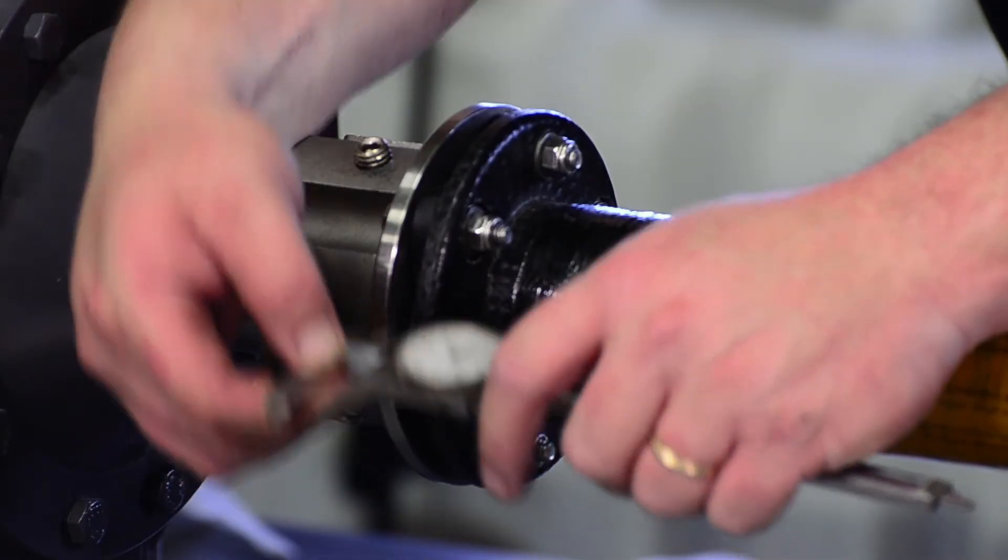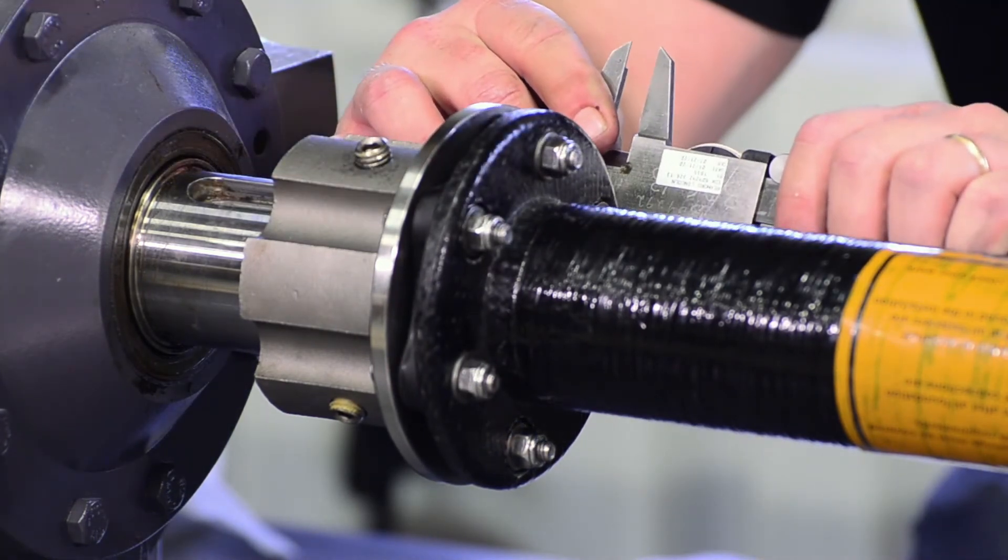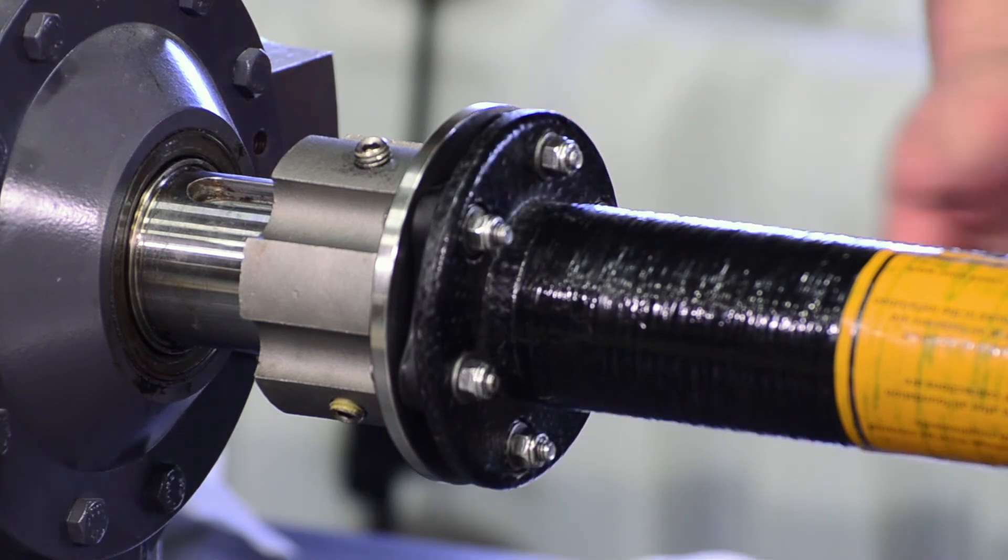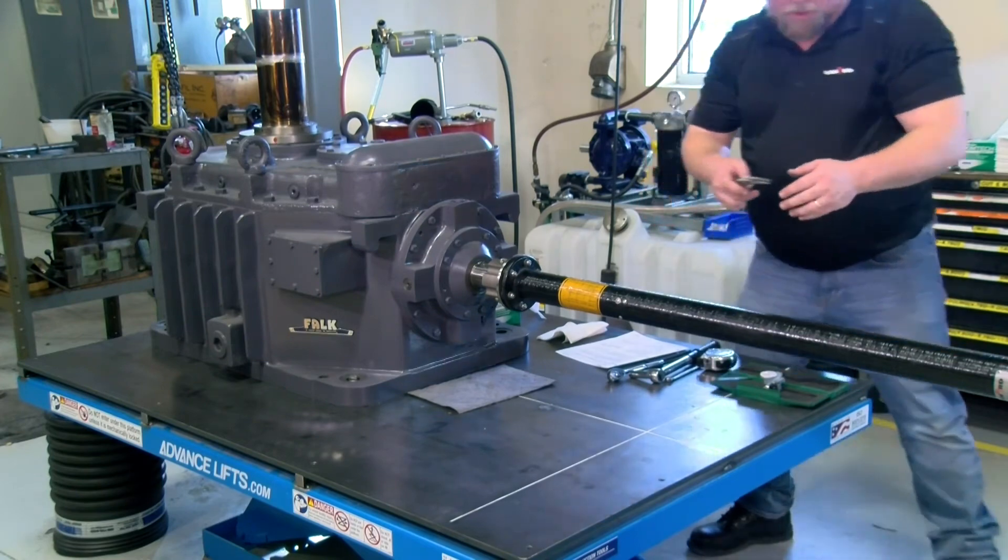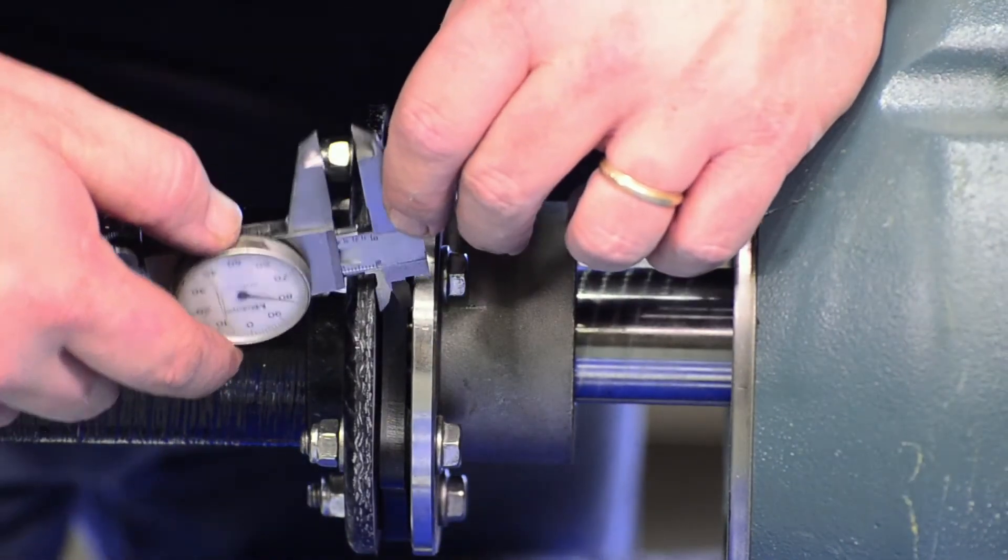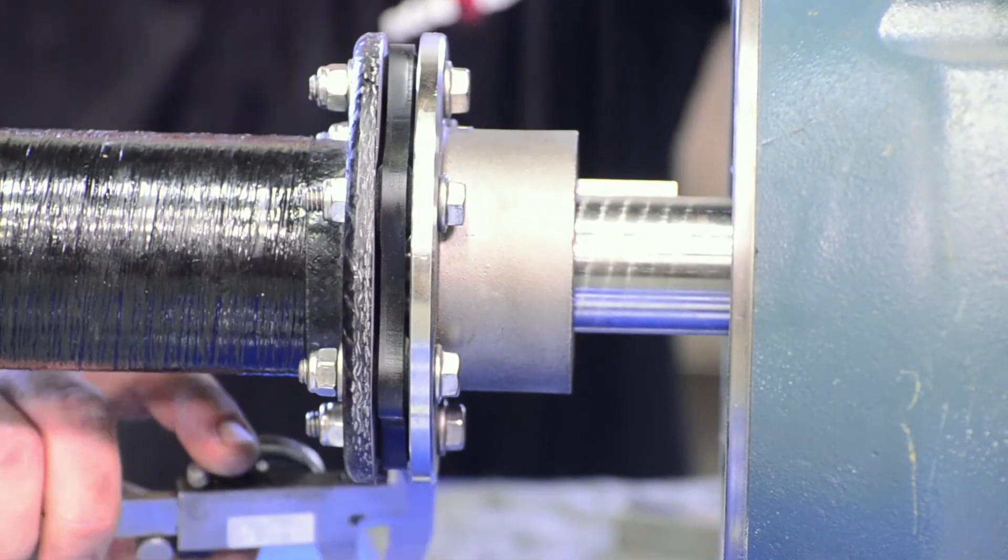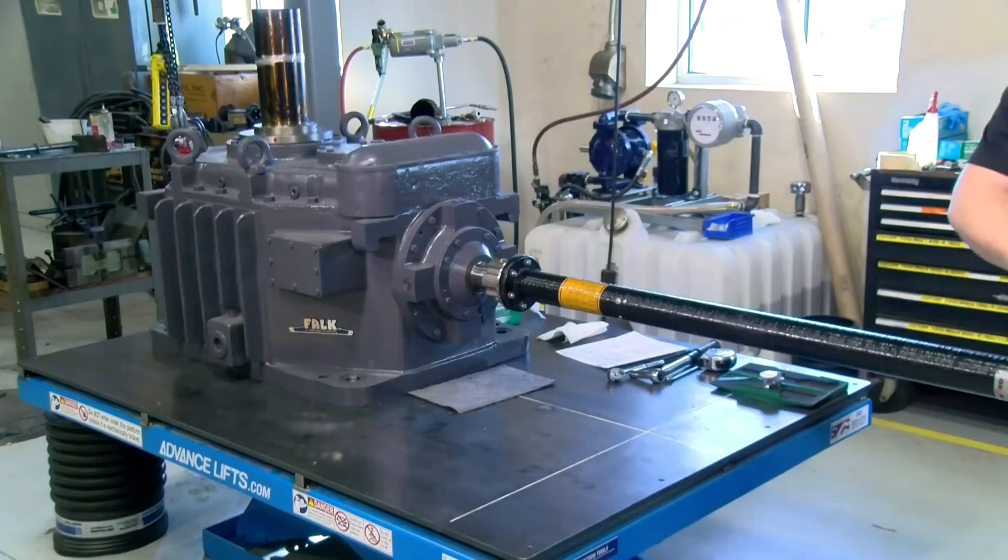To check axial alignment, a caliper should be used to measure the gap between the spacer and hub flanges on each coupling end. Without rotating the coupling, take four readings around the perimeter at 90 degree intervals as shown. For each coupling end, compare the average of the four readings to the specified axial alignment limit. If this calculated average exceeds the specified limit, the corresponding hub must be repositioned and axial alignment reverified.